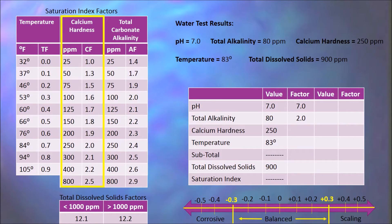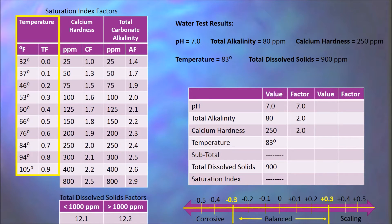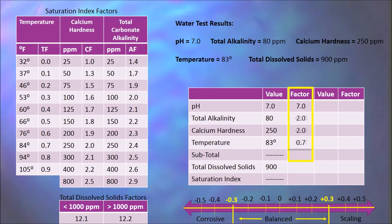Next, we will look at our calcium hardness. Our calcium hardness value is 250 parts per million. Looking at the chart to the left, we can see that 250 parts per million has a calcium factor of 2.0. Next, we will look at our temperature factor. Our actual water temperature was 83 degrees. Looking at the temperature column on the left, 83 degrees is not one of the options, so we must round again to the next higher number, giving us a temperature factor of 0.7. We will add pH, total alkalinity, calcium hardness, and temperature factors together to determine our subtotal. Our subtotal is 11.7.